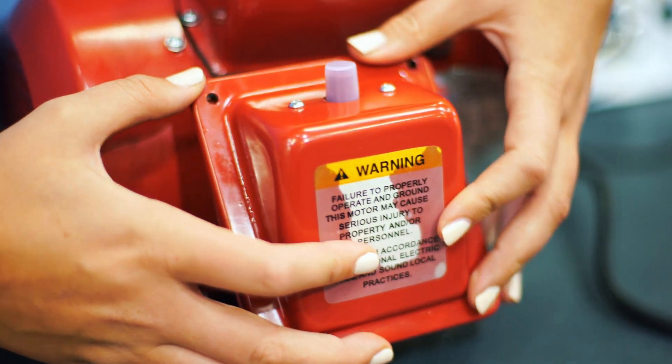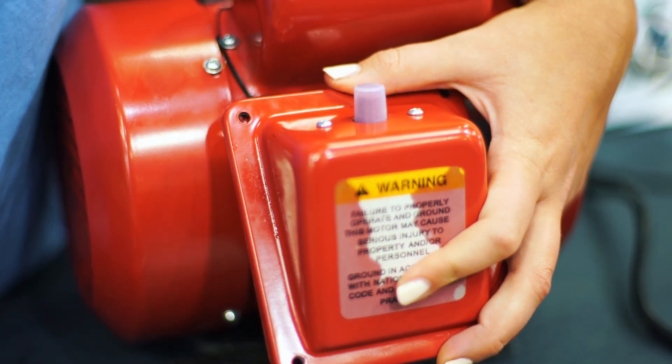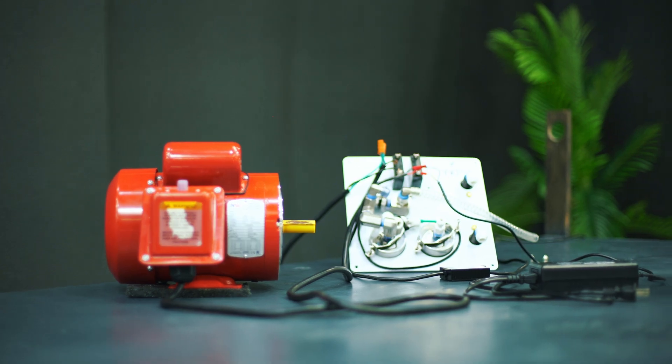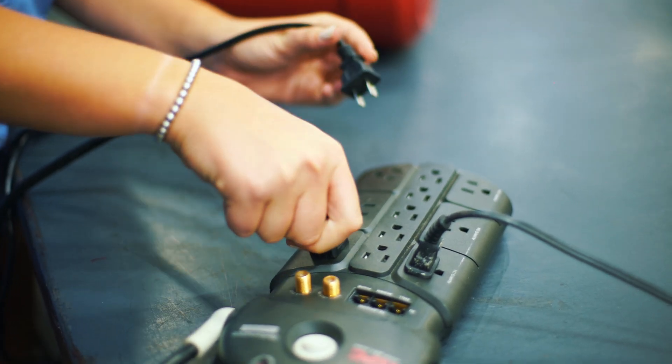Next, cover the motor wires with the electrical box cover and the breaker box with its cover. Power your system by plugging into your power outlet.